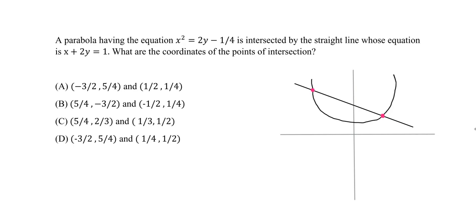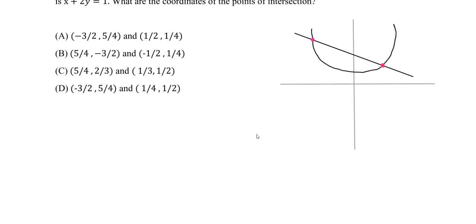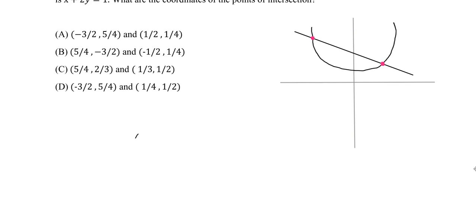In order to do that, the first step is to extract the equation for the parabola. We know it's x squared equals 2y minus one-fourth. So let's write that down: x squared equals 2y minus 1 over 4. Then what we're going to do is set all of this equal to 0. So solving, we'll have x squared minus 2y plus 1 over 4 equals 0.